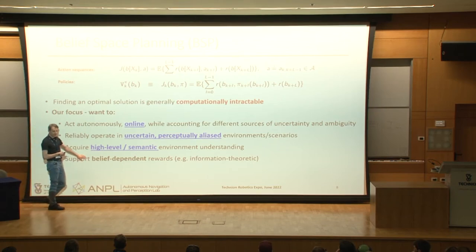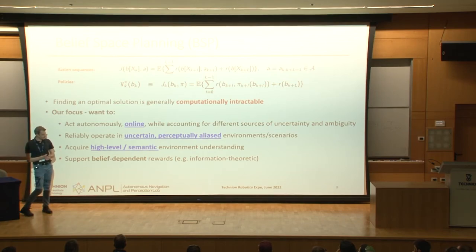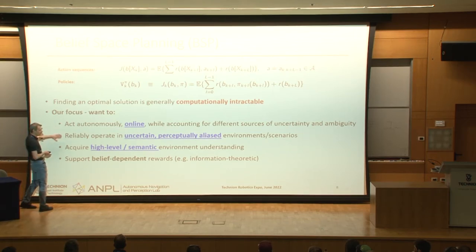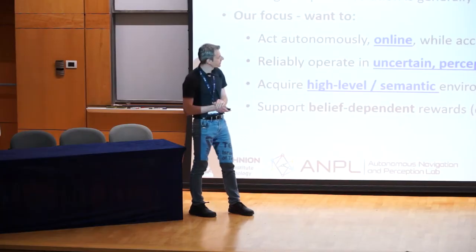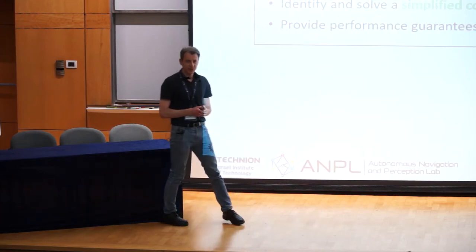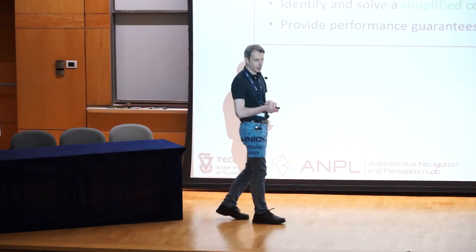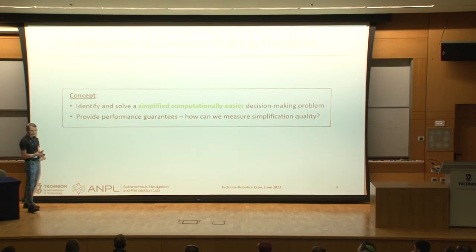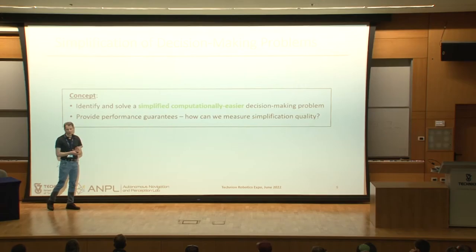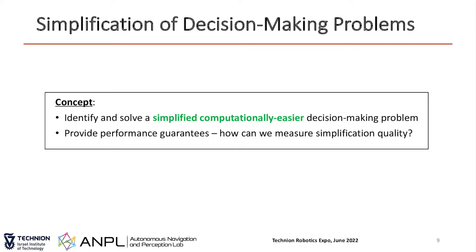We also want to support belief-dependent rewards — meaning we want to actively reduce uncertainty. In the time remaining, I'll describe a specific direction that addresses mainly the computational complexity. This direction calls for simplification of decision-making problems. The concept is: identify a simpler problem that is easier computationally to solve than the original, and at the same time provide performance guarantees with respect to the original problem. The question is how we measure simplification quality.